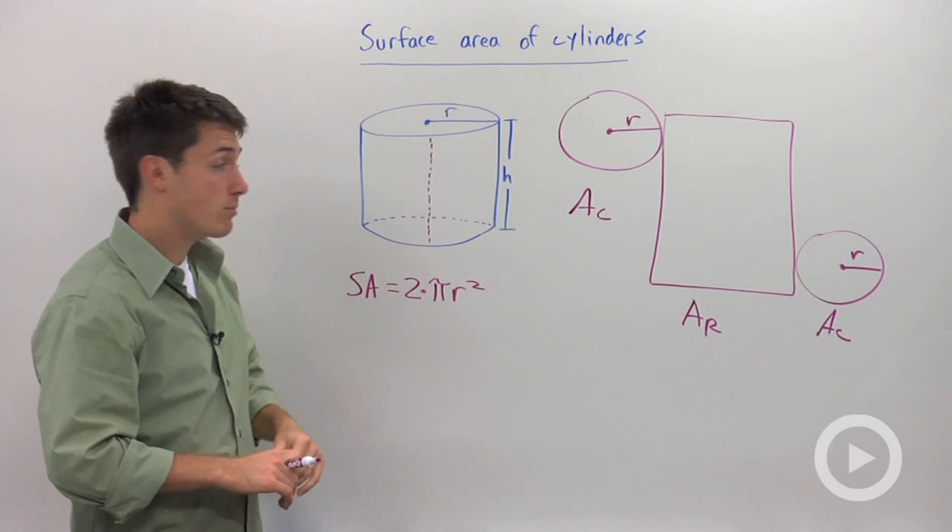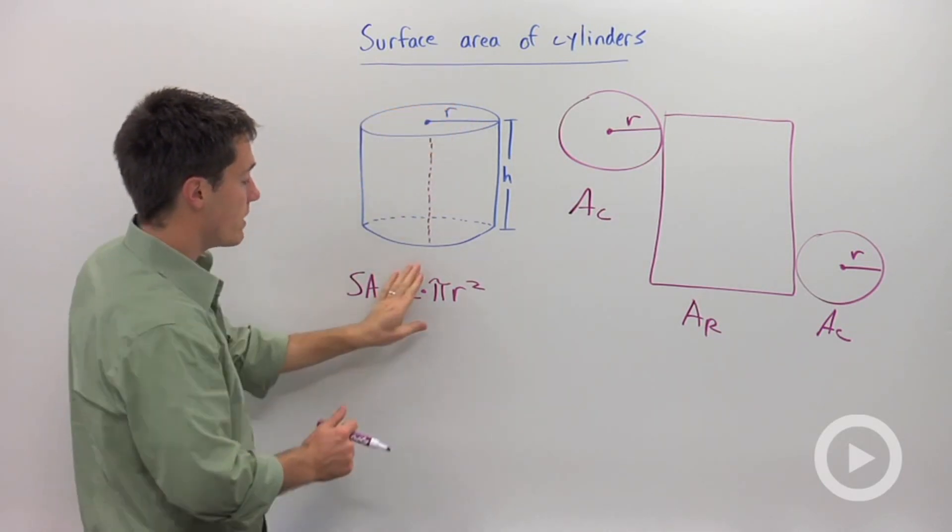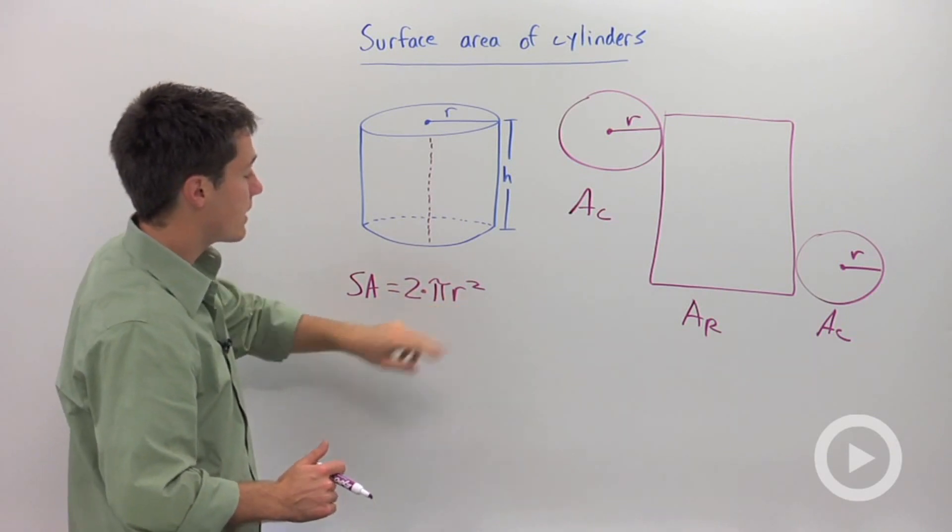Now you want to be careful on those homework problems where they leave out the top. What you're going to do then is you're going to omit this two, and you're just going to say π r squared.